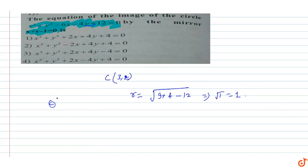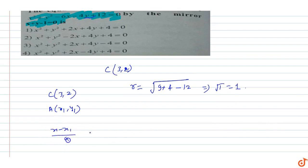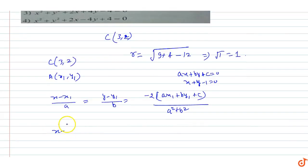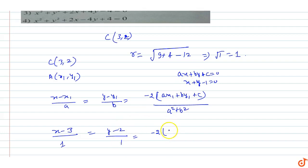To find the image of the circle, we find the mirror image of center C(3, 2). For any point (x1, y1), the mirror image formula with respect to line ax + by + c = 0 gives: (x - x1)/a = (y - y1)/b = -2(ax1 + by1 + c)/(a² + b²). Our mirror line is x + y - 1 = 0, so a = 1, b = 1. Substituting: (x - 3)/1 = (y - 2)/1 = -2(1·3 + 1·2 - 1)/(1² + 1²).